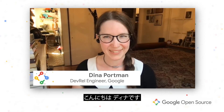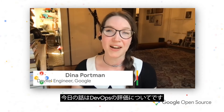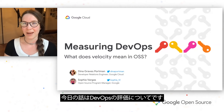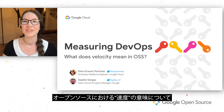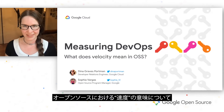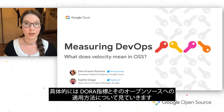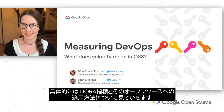Hi, I am Dina. I am a Developer Relations Engineer with Google Cloud. And our talk today is Measuring DevOps: What does velocity mean in open source? Specifically, we are going to be looking at the DORA metrics and how they apply to open source.